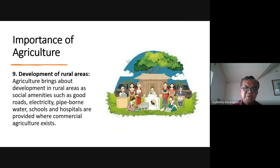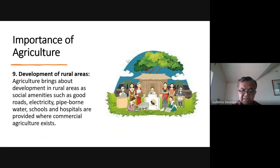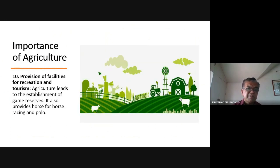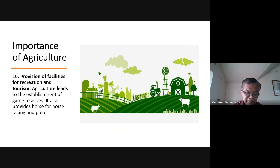Number nine is the development of rural areas. Agriculture brings about development in rural areas — social amenities such as good roads, electricity, piped water, schools, and hospitals are provided where commercial agriculture exists. Number ten is the provision of facilities for recreation and tourism. Agriculture leads to the establishment of game reserves and also provides horses for horse racing and polo. Visit our agri-ecotourism facilities when you get a chance.